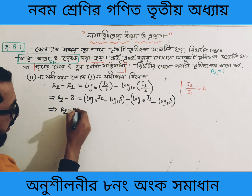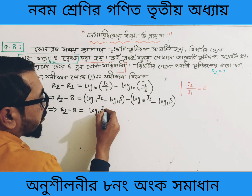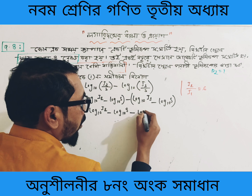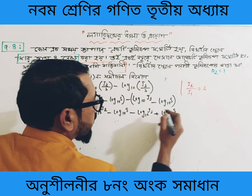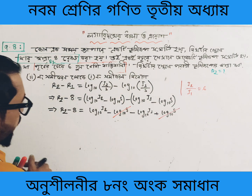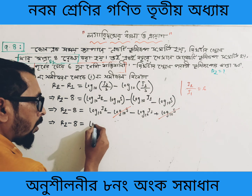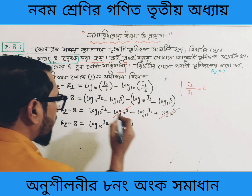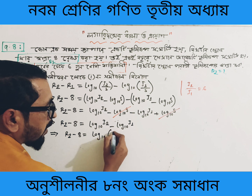R2 minus 8 is equal to log base 10 of i2 minus log base 10 of s, minus log base 10 of i1 minus log base 10 of s, which simplifies to log base 10 of i2 minus log base 10 of i1.